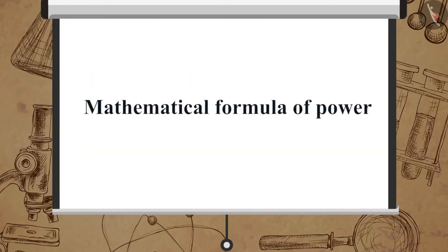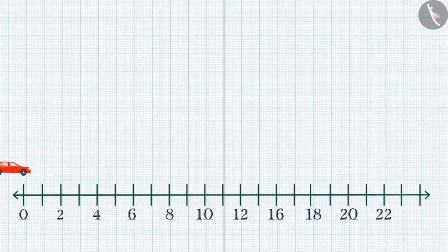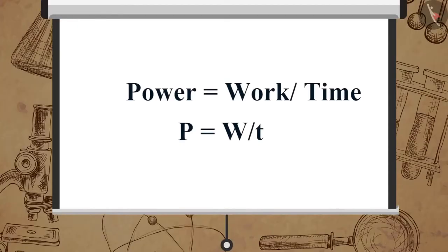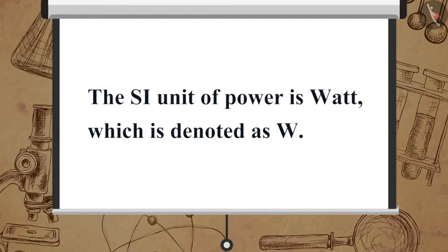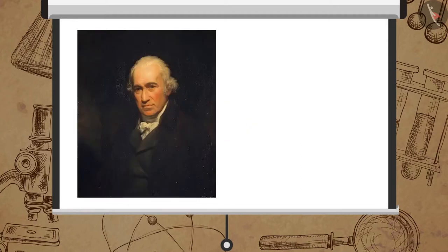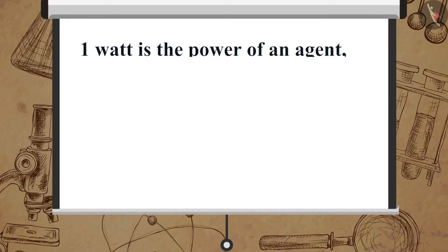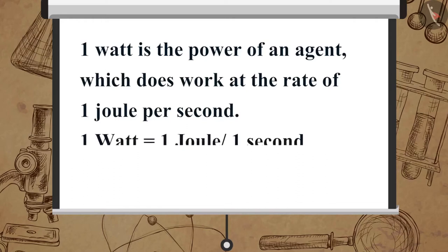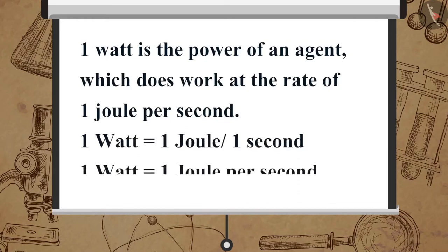Now let us look at the mathematical formula of power. Let the work done by an object be W in time T. Then power P = W / T. The SI unit of power is Watt, denoted as W, named to honour the Scottish inventor James Watt. 1 Watt is the power of an agent which does work at the rate of 1 Joule per second: 1 W = 1 J/s.